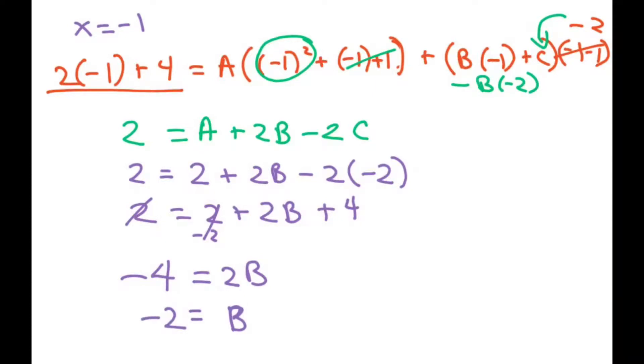Now we're just going to plug everything in. So we have 2x plus 4 divided by x cubed minus 1. And our a was 2 divided by x minus 1. Our b was negative 2. And our c was negative 2 divided by x squared plus x plus 1. And that's your final answer.